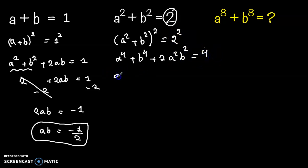Now 2a²b² is equal to 2(ab)², which equals 2 times ab squared. So a⁴ plus b⁴ plus 2(ab)² equals 4.